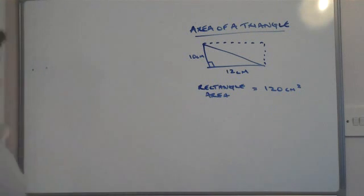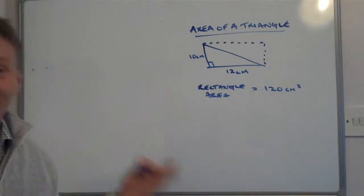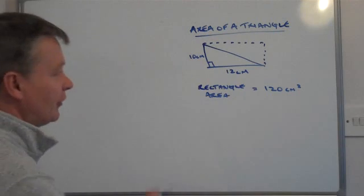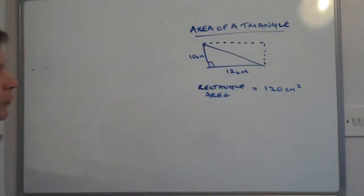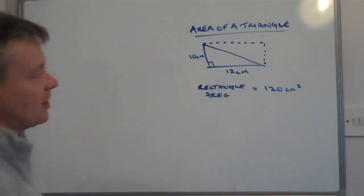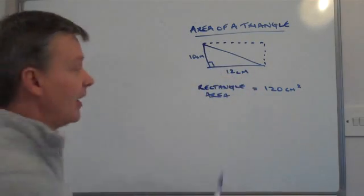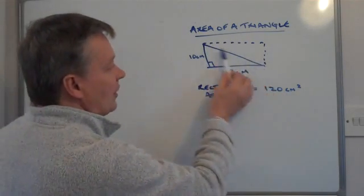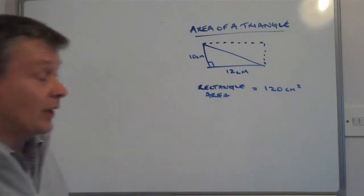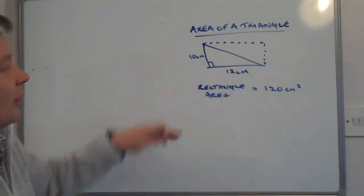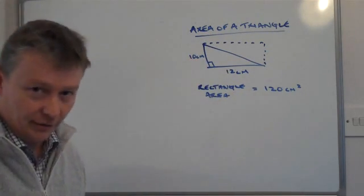However, we don't really want to know the rectangle area, we want to know the area of the triangle. If you look at this diagram, what I hope you'll see is that this triangle here is exactly the same as this triangle here. In other words, this triangle is half the area of the rectangle.